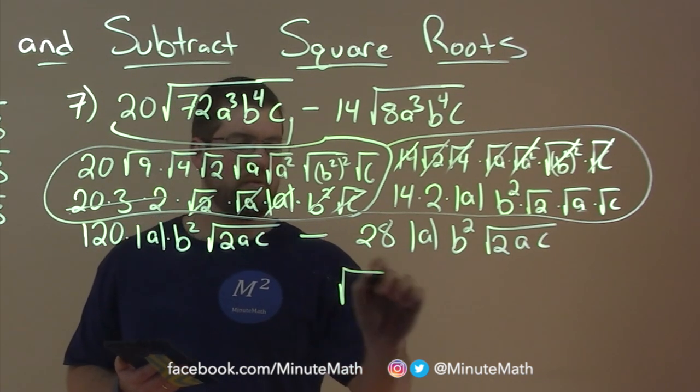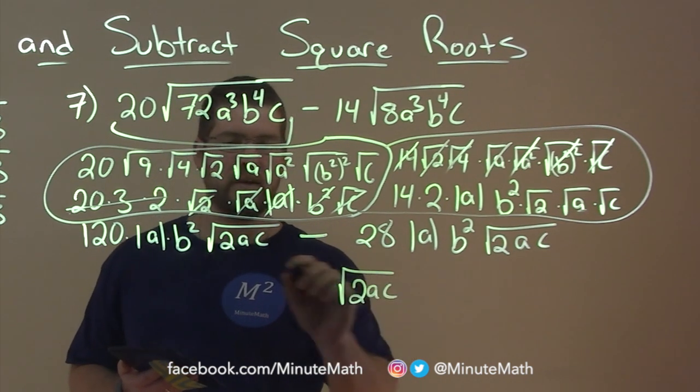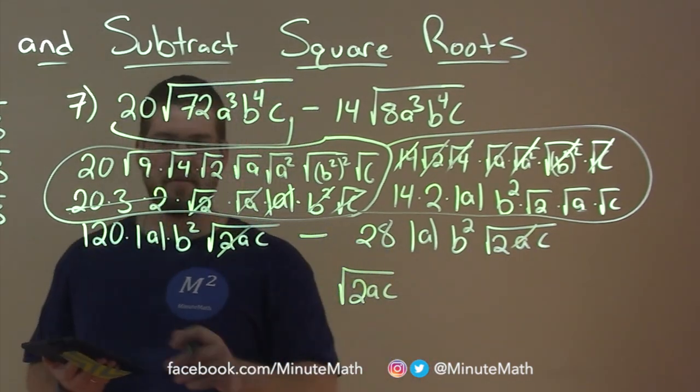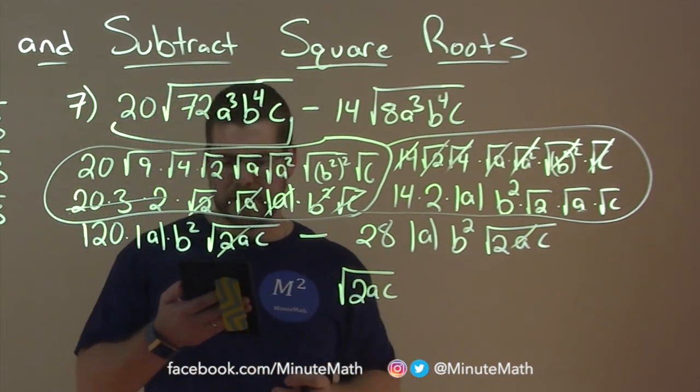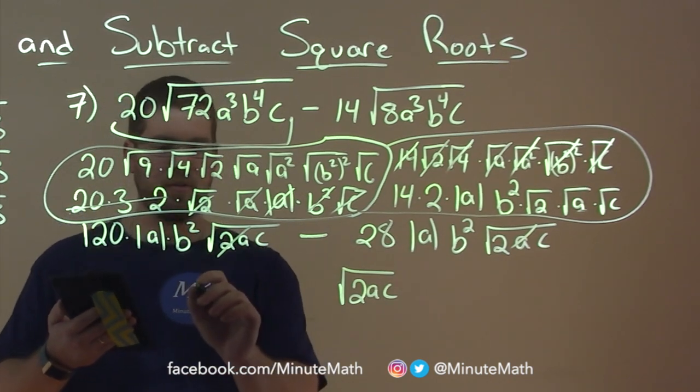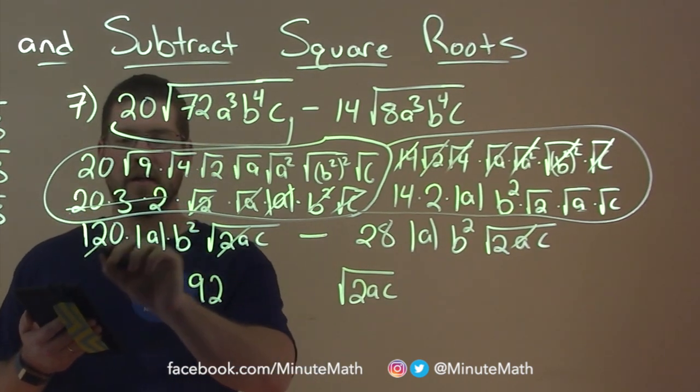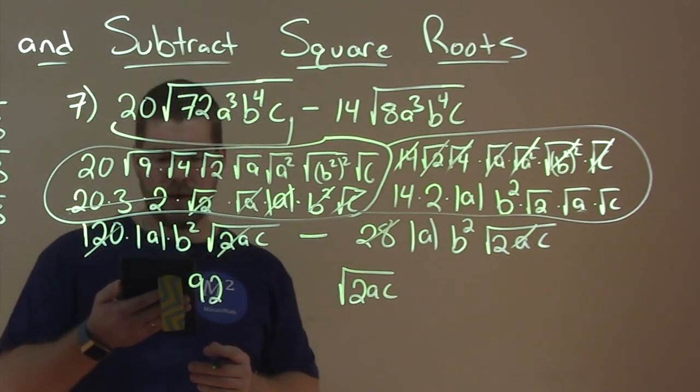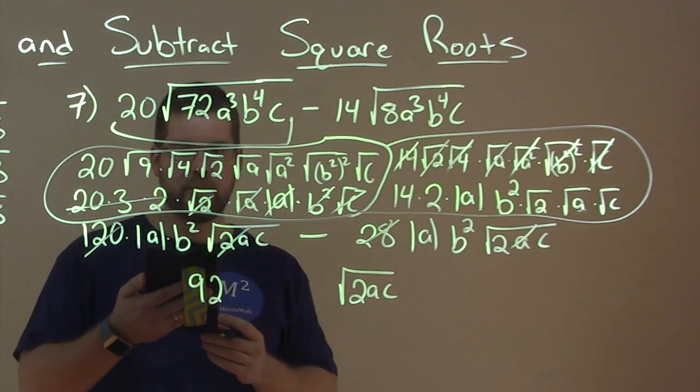So now we have the same radicals. So now we can combine them together to be, really subtract across under one big radical. So I'm going to put the radical first, the square root of 2ac. Now we subtract our like terms in a sense. 120 minus 28 is 92. And then absolute value of a minus absolute value of a.